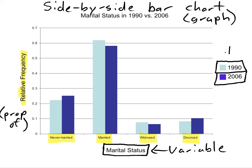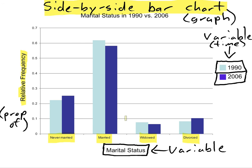We're actually seeing two variables at the same time. One is time — time is a variable; it changes — with two levels: 1990 and 2006. We have marital status with four different possible values. When we display the marital status for each different time period, we call that a side-by-side bar chart, and it gives us information about what's changing over time.